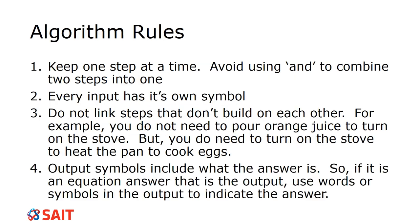There are some algorithm rules. First: one step at a time. For example, if the algorithm is getting out of bed, you don't say 'roll over and take off the blankets' as one step. You say step one is roll over, and then the next step is remove the blankets — because those are two different things that are not directly related to each other.